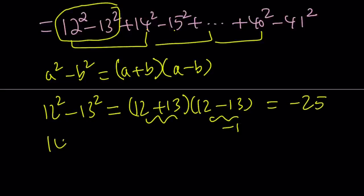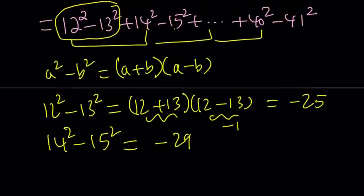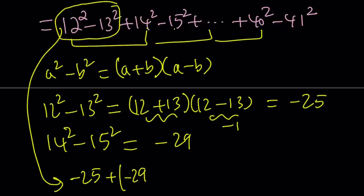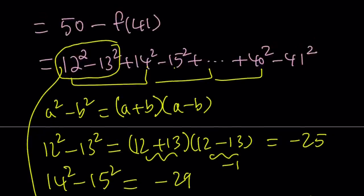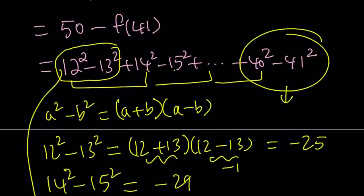So if you did, for example, 14² - 15², that would be negative 29 because the sum of 14 and 15 is 29, and so you're going to get the opposite. Make sense? So in other words, this sum right here turns into -25 + (-29) + (-33) ... all the way up to -81. And the last one is negative 81 because 40 + 41 is 81 and we have to negate that.